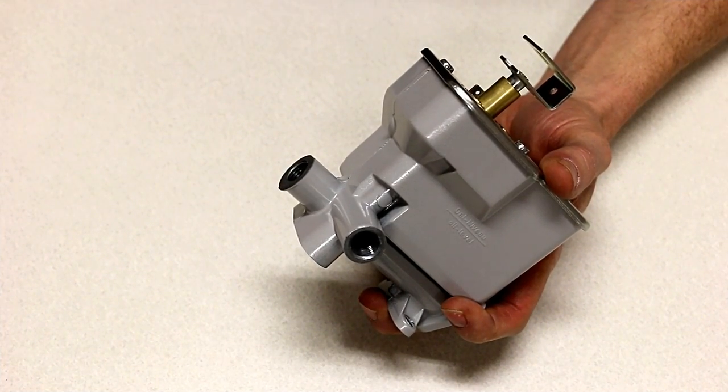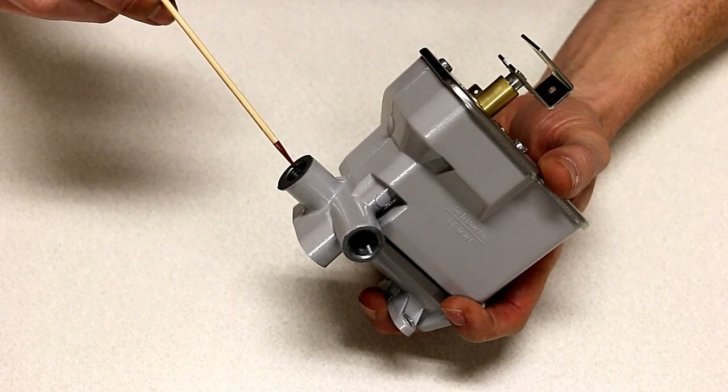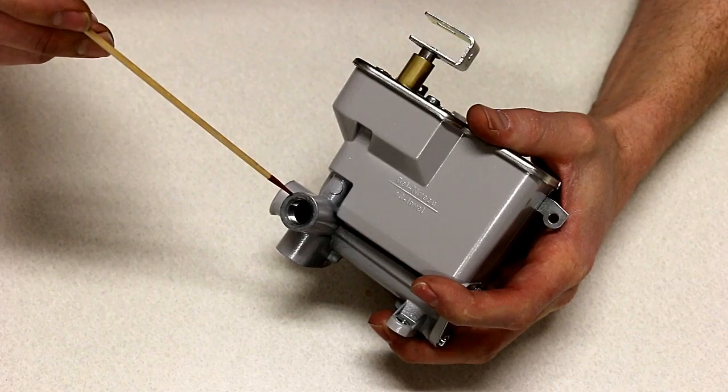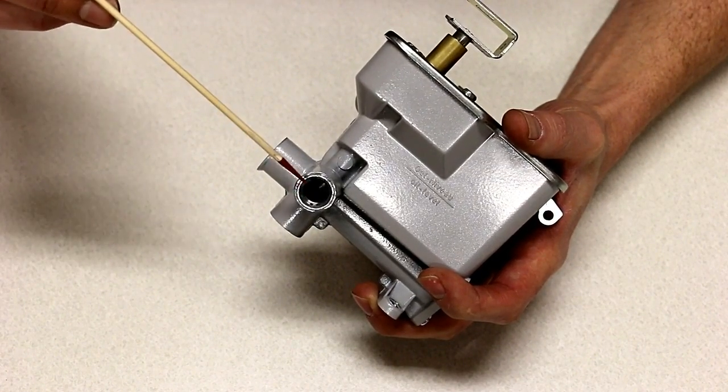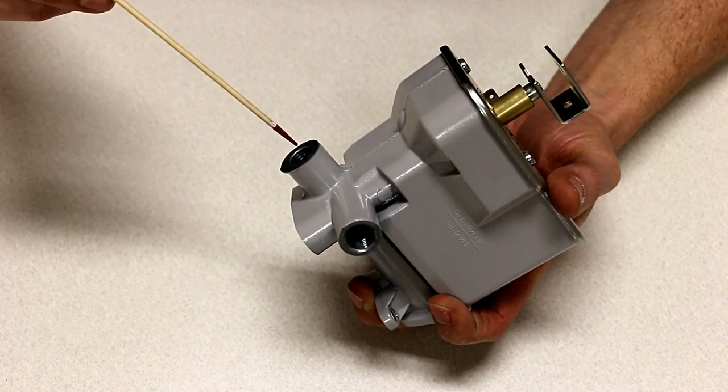The next thing we'll look at are the fuel oil connections. This here is where your oil line is going to come from your tank. This one here is where it will leave the oil control and go to the burn pot in your stove. You'll want to use a little bit of thread tape or some sort of sealant to make sure that these don't seep oil.